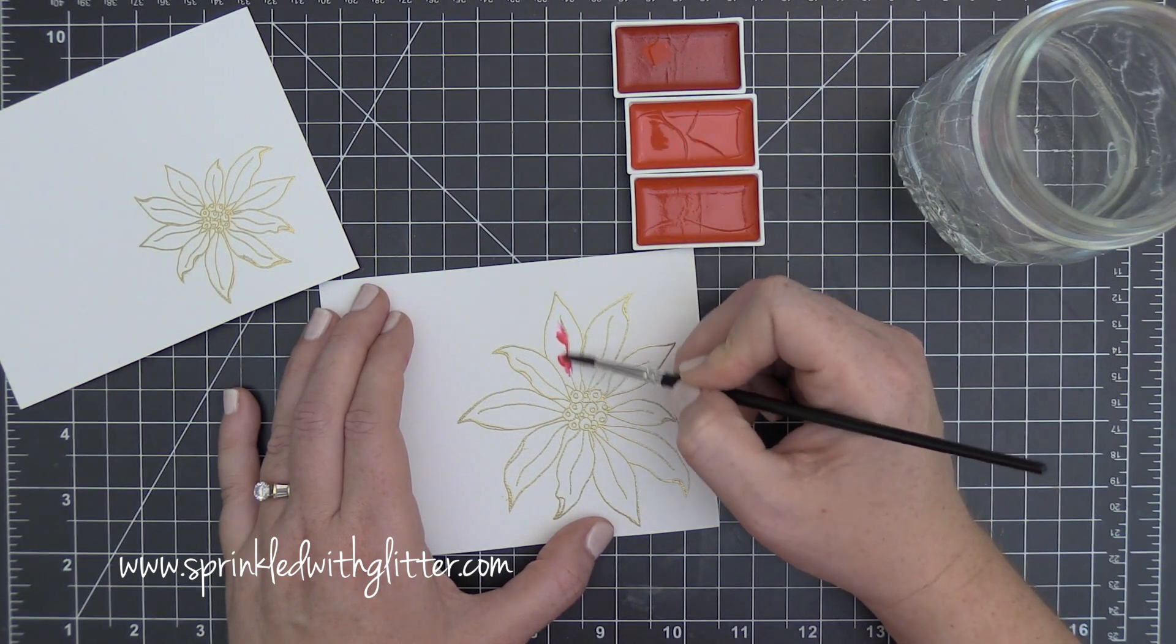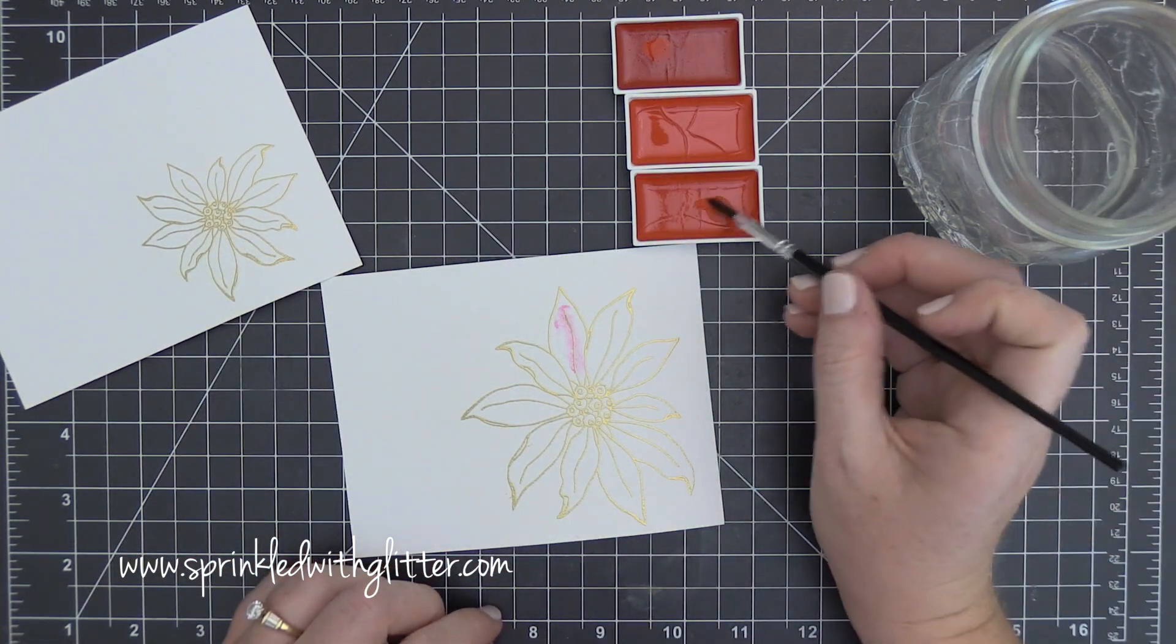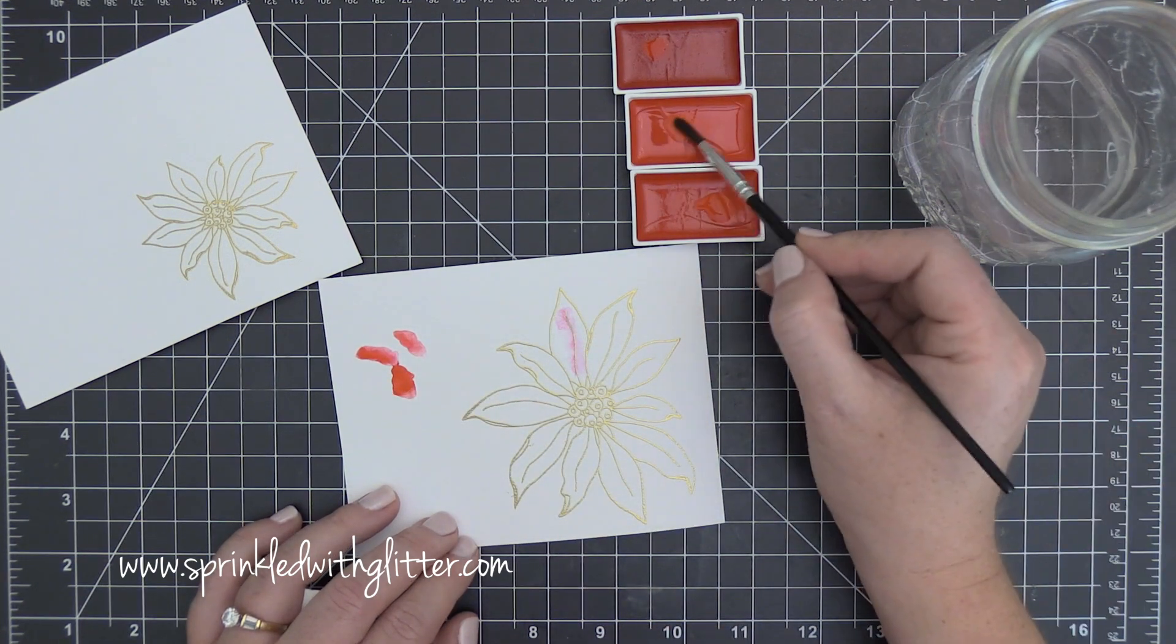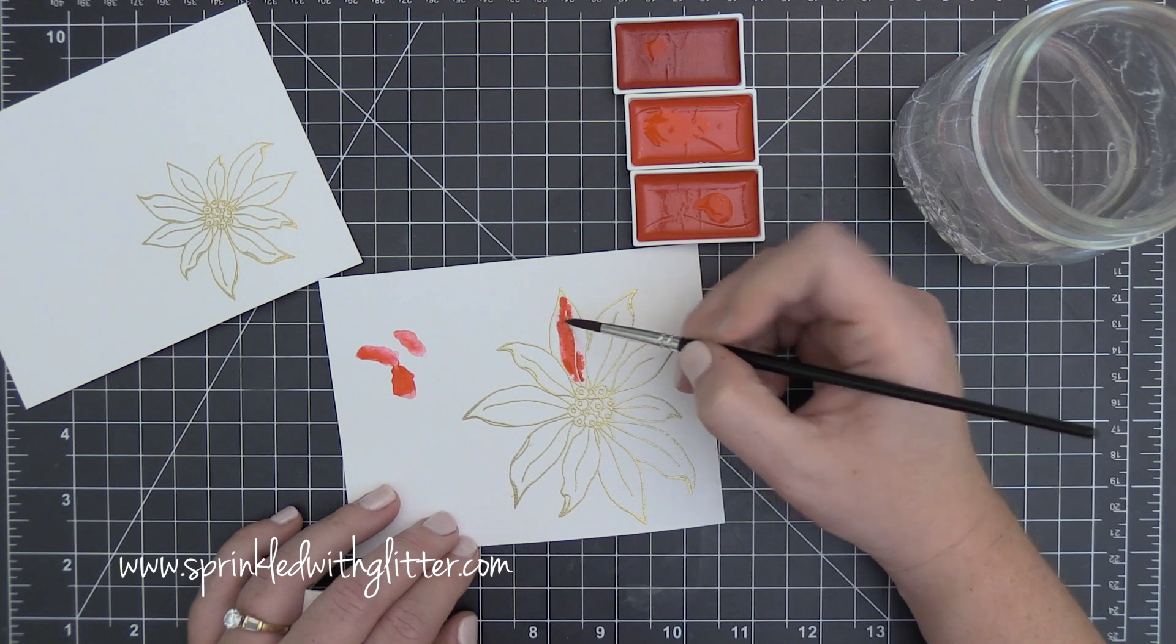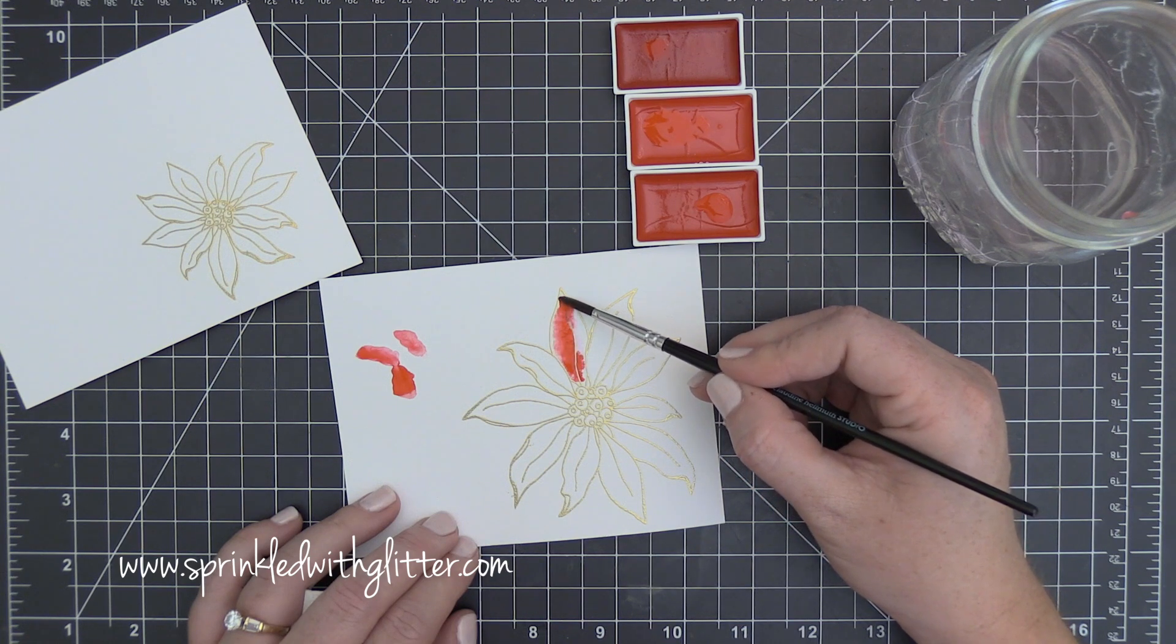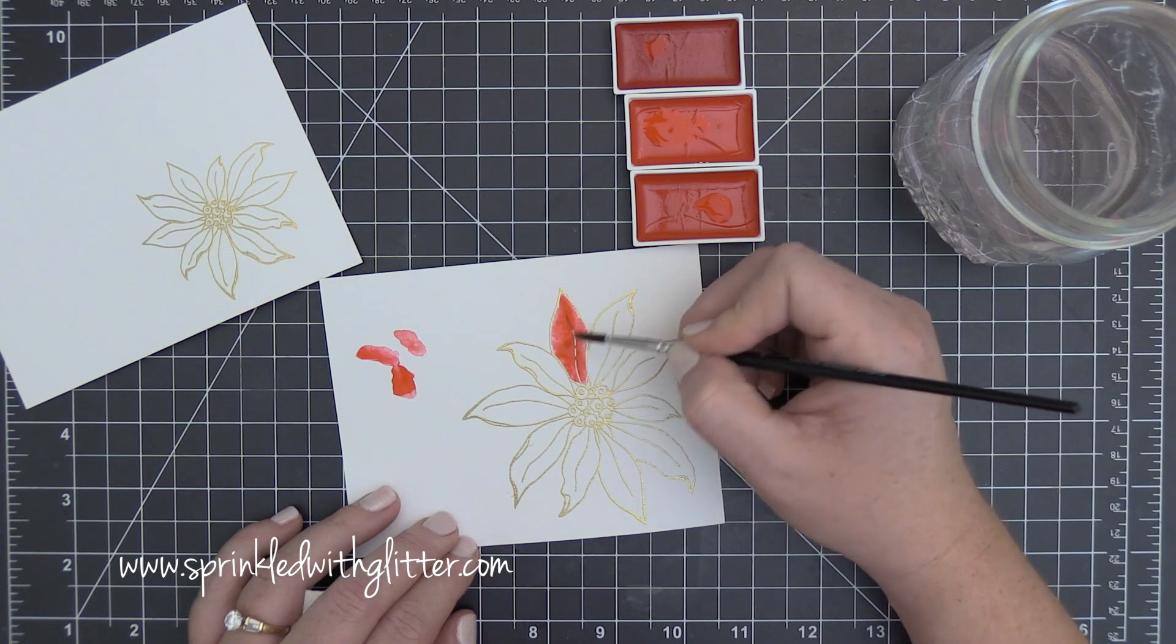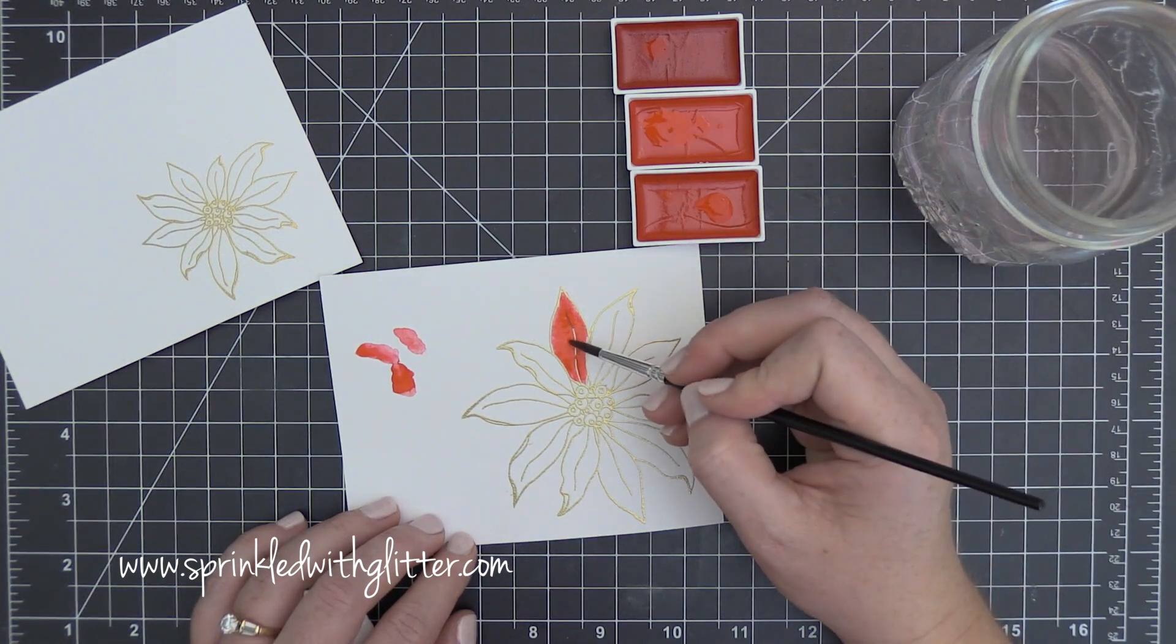So now I have my Kuretake Gansai Tambi watercolors and I'm going to watercolor these poinsettias using a little bit of some variations of some red. Now I started out with that one on the top and I did not like how pink it was so I went ahead and moved to the 32 and the 30. Those are the colors of the watercolors that I'm using. I've added some clean water into a few of those petals and then I'm just going to start watercoloring these in. For the larger portion of these petals I'm using that more orange color and then the darker one I'm using to add some shading to it. I really like using a couple of different colors because it gives me a variation in color and adds a little bit of interest to the flower petals as well.